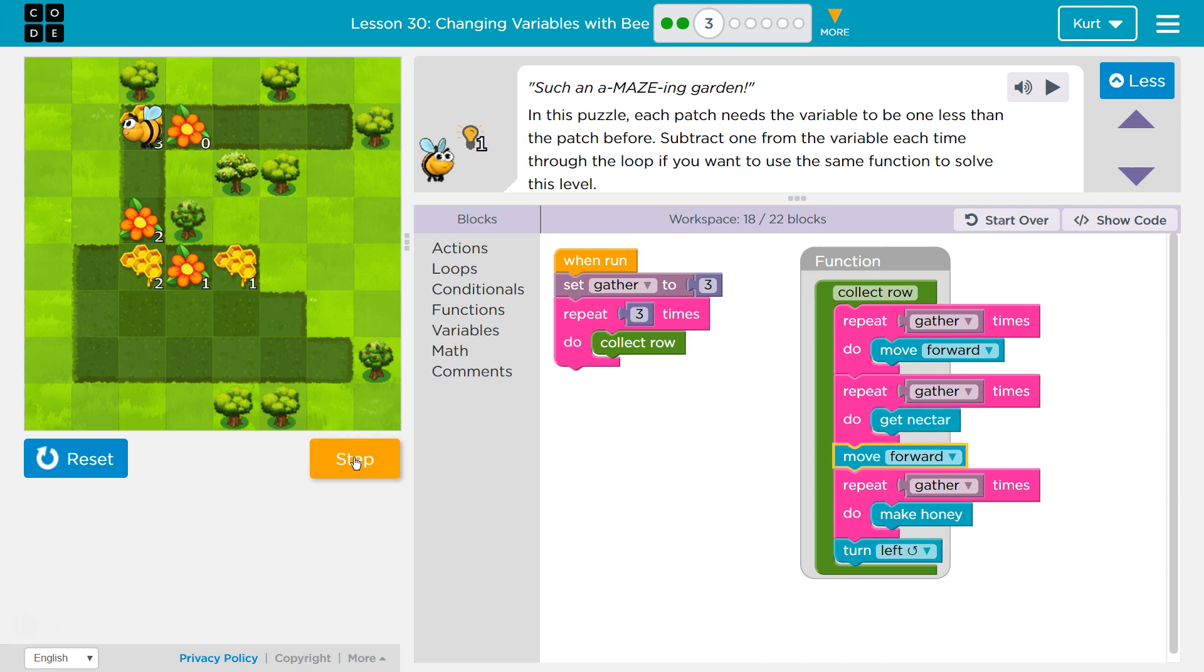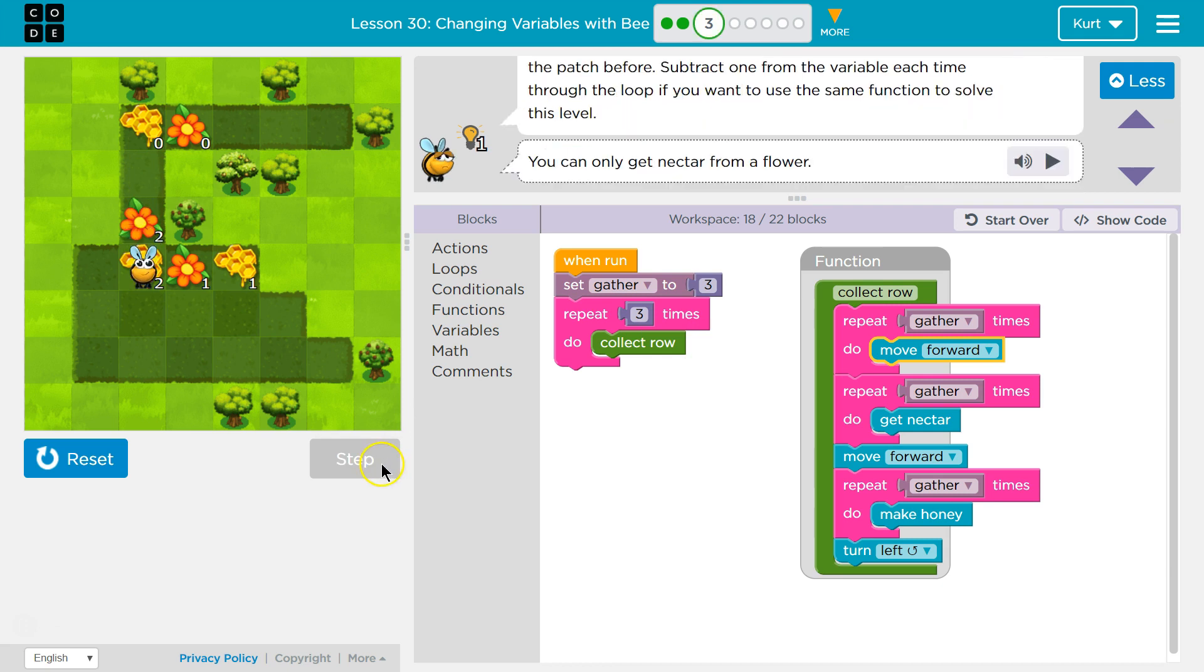And now we should move forward. Yep, and now we should make honey 3 times. 1, 2, 3. Now we should turn left. And then we are going to repeat row again, because we're running it 3 times. Now we're going to move forward how many times? 3 times. Oh, I see the problem.